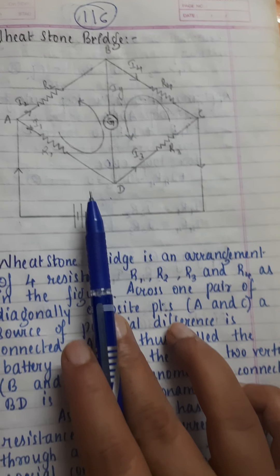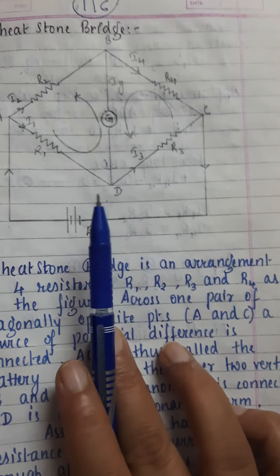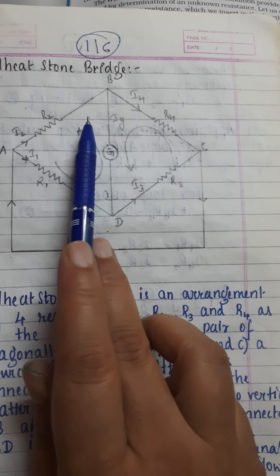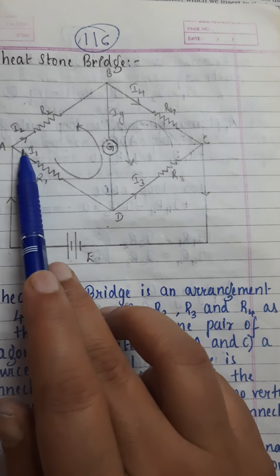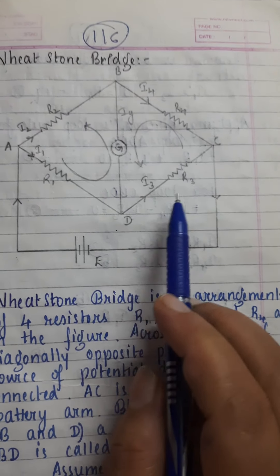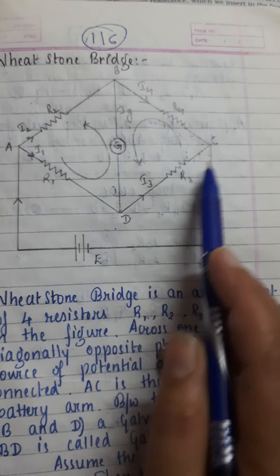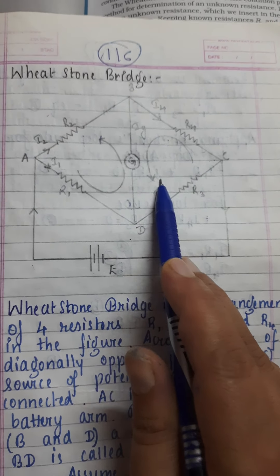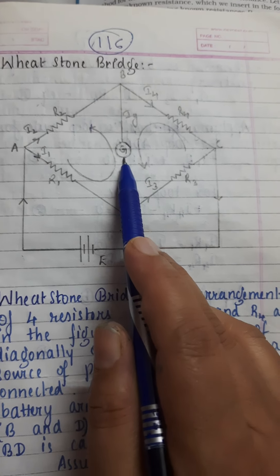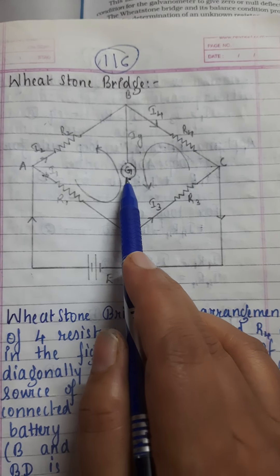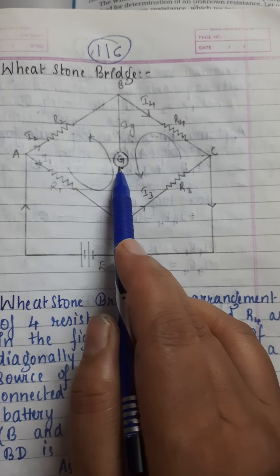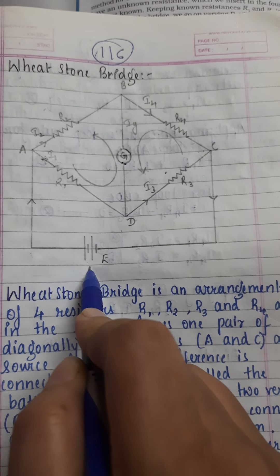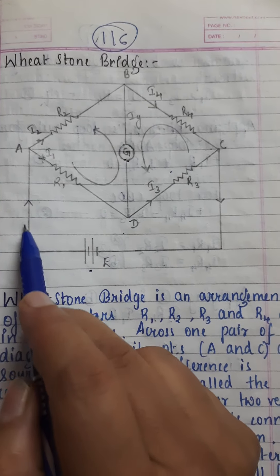To use this Wheatstone Bridge, we will take two loops: the first loop is ADBA, and the second loop is CBDC. We need to achieve null deflection — meaning the galvanometer should show zero current — to calculate the loop values.